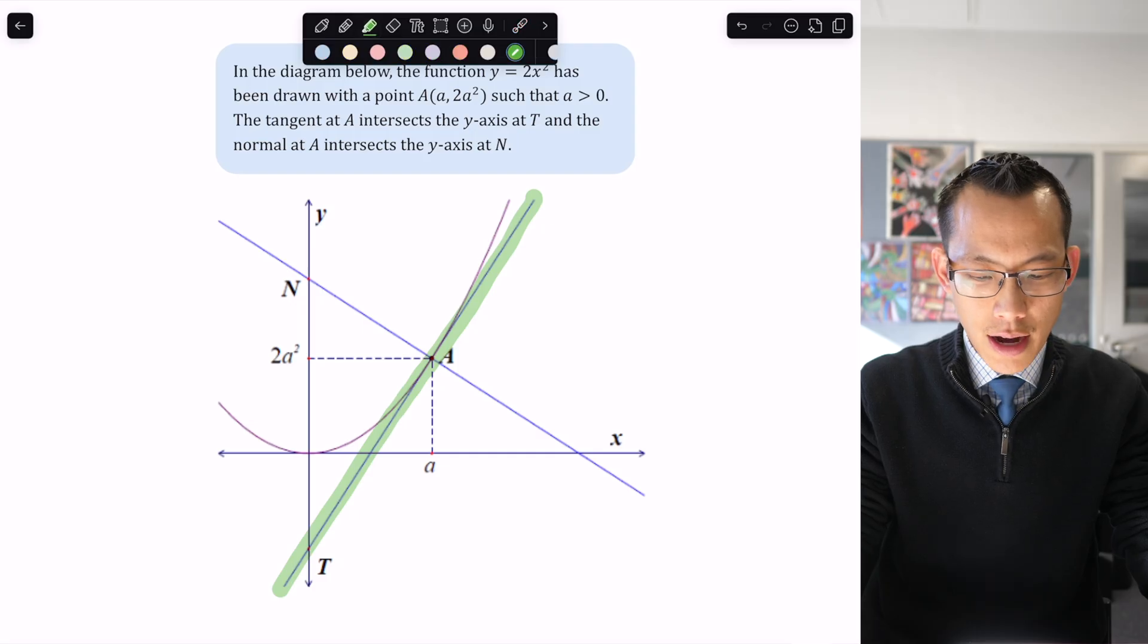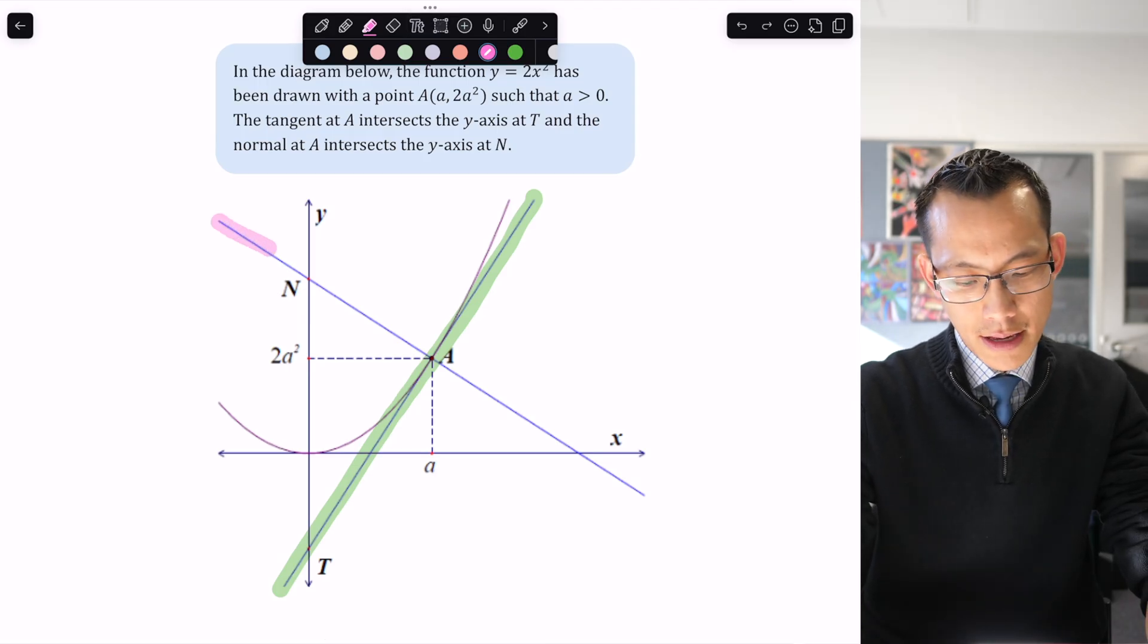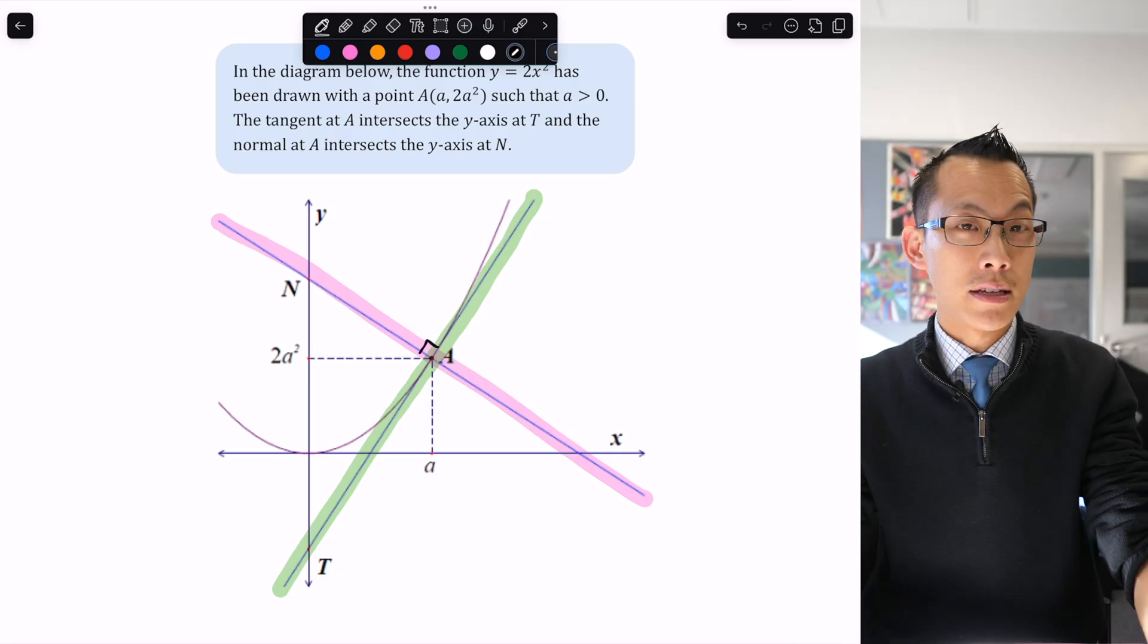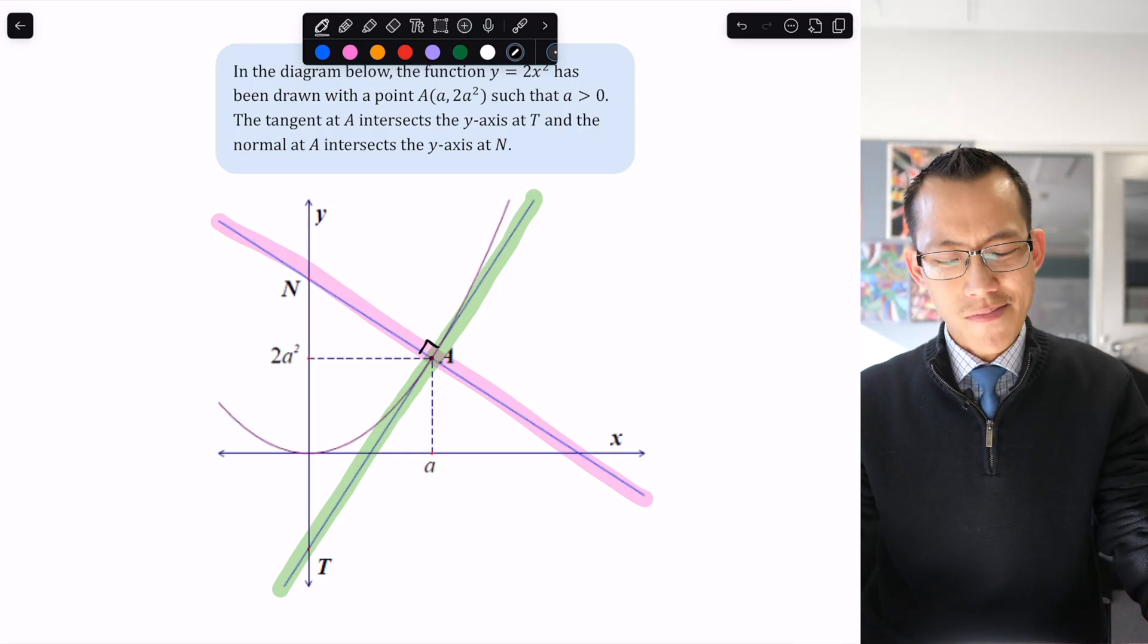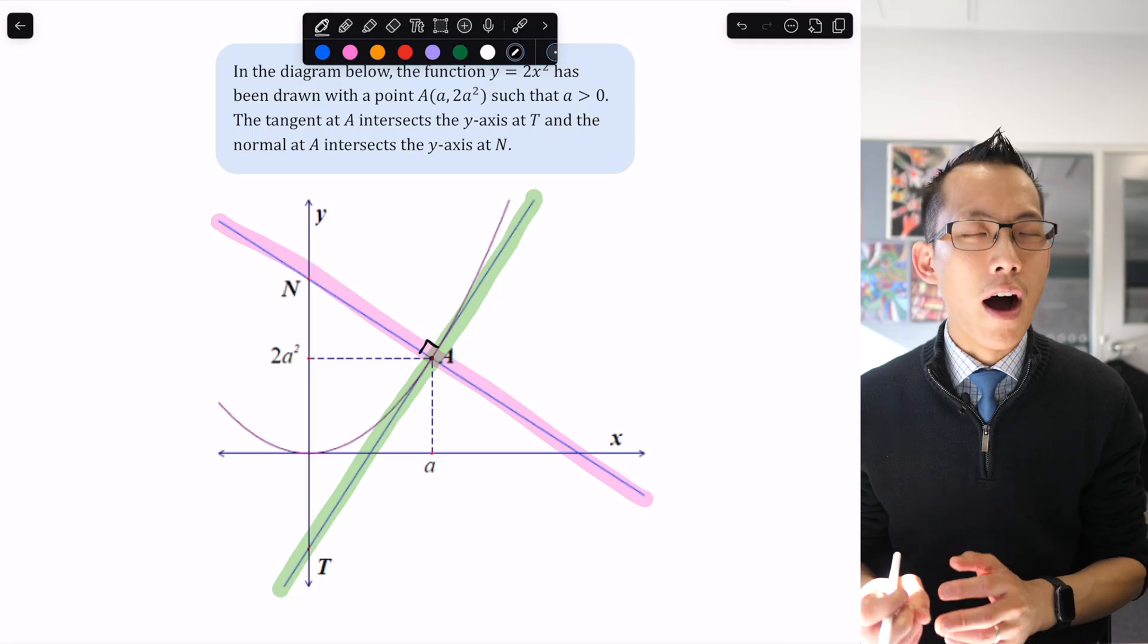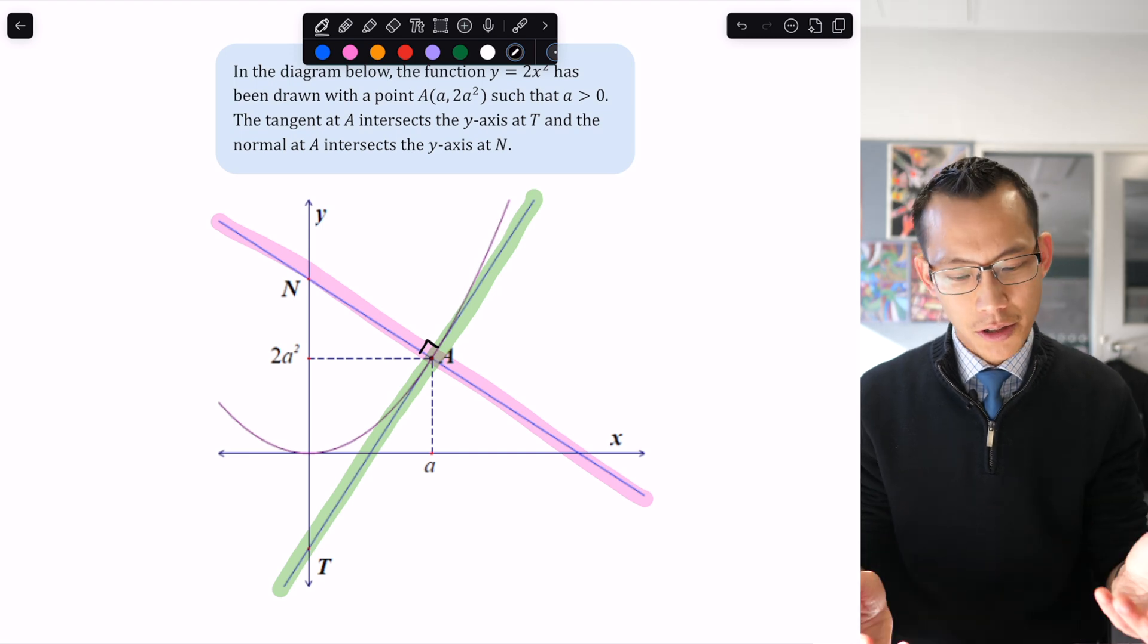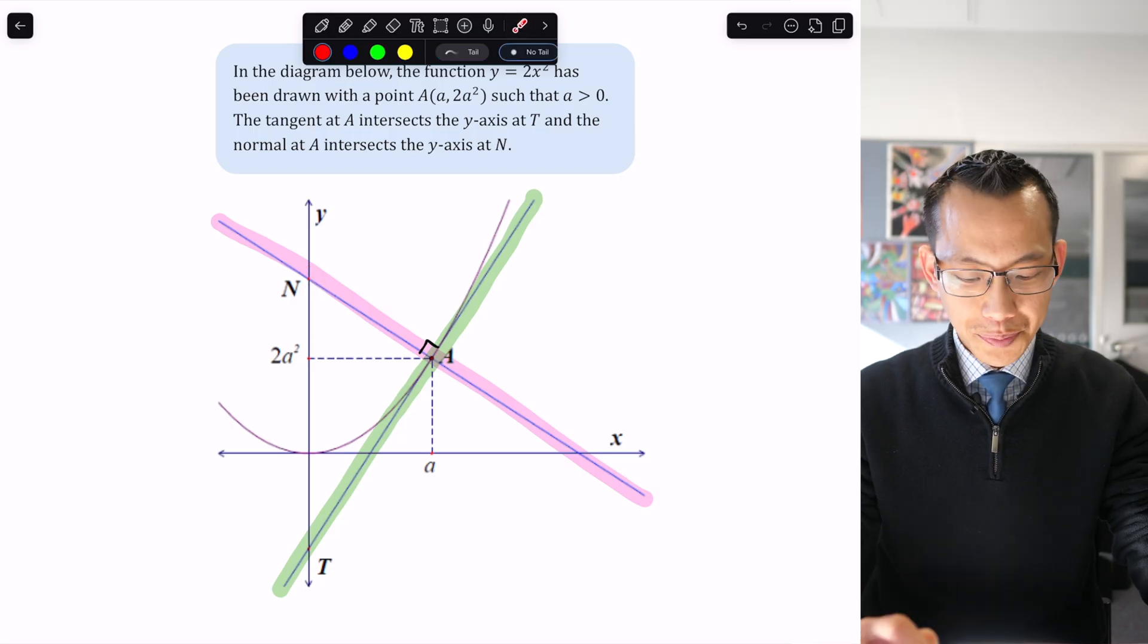The normal at A is this line in pink that goes through A at right angles to the tangent. That's what we define a normal to be. Normals are important for things like angles of reflection, electromagnetic radiation, computer graphics, and movies. That normal intersects the y-axis at N.